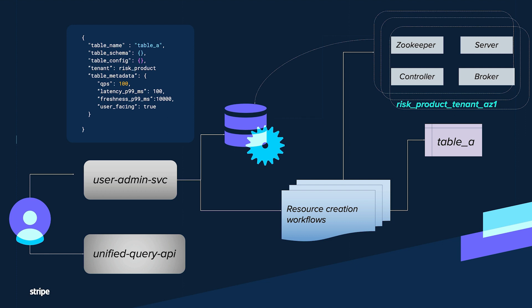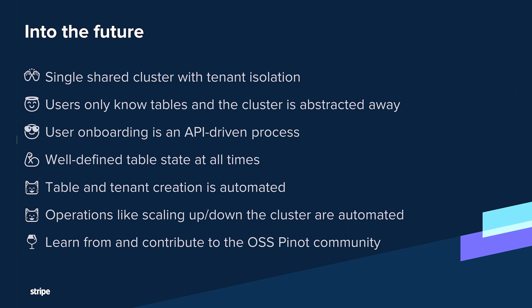All of this is in different stages of development — some being designed, some being implemented. For all new use cases, the model we want to move to is a single shared cluster with tenant isolation. Pinot already has a concept of tenants and tags to isolate servers and brokers by tenant tags, isolating workloads and storage. Users should only care about tables, not clusters. Onboarding becomes less human-dependent, users can always know the state of their table, and for our team, resource creation and operations like scaling are more automated and observable.